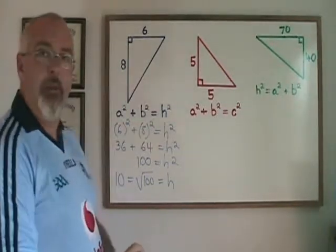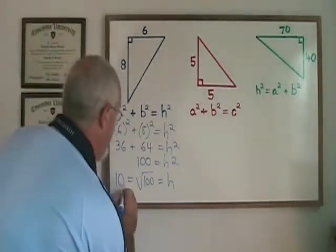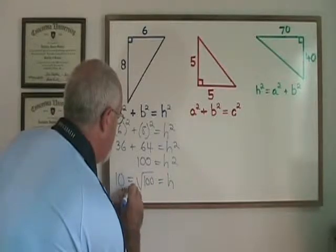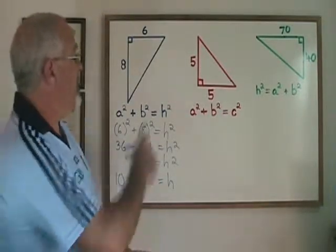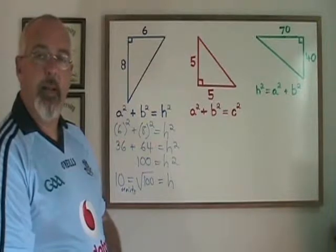Because no unit of measure was given in the problem, I am just going to write 10 or 10 units. The hypotenuse in this blue right triangle is 10 units in length.